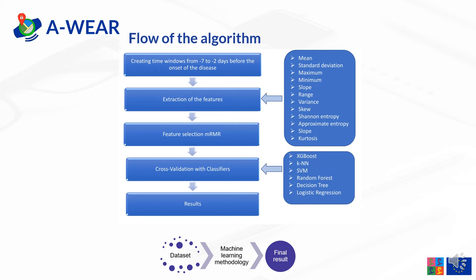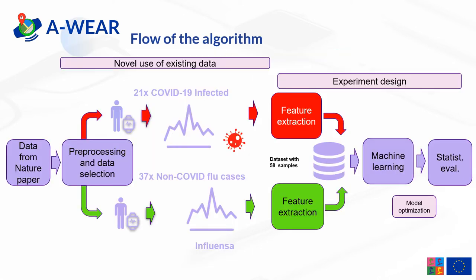The number of features was set to 50. Subsequently, the classifier was used together with 10-fold cross-validation. The classifiers used were XGBoost, KNN, support vector machine, logistic regression, decision trees, and random forests. The scenarios were carried out for binary classification and multi-class classification. The features extracted from the time series were commonly statistical measurements like mean, standard deviation, maximum, minimum, range, variance, time-series-specific parameters, skewness, entropy, approximate entropy, slope, skew, and kurtosis. Next, the machine learning steps were evaluated, and additionally some statistical evaluation was provided.